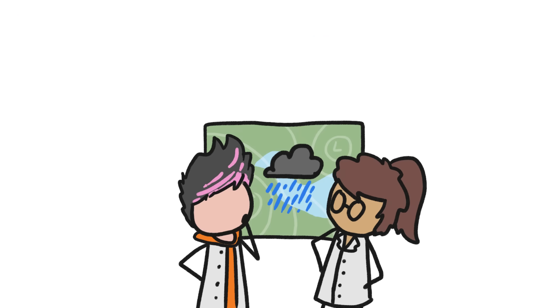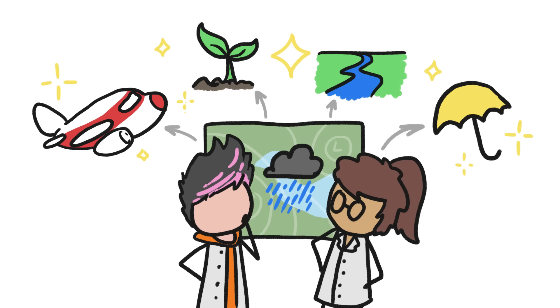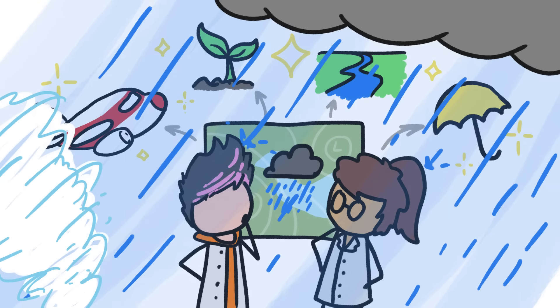More accurately predicting rainfall will help us with all sorts of stuff – air travel, farming, water management, emergency planning, and more, especially as the weather gets more extreme.